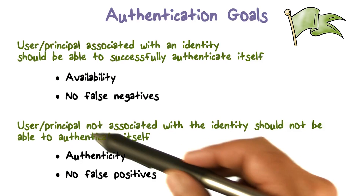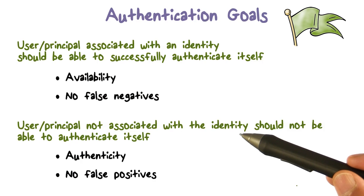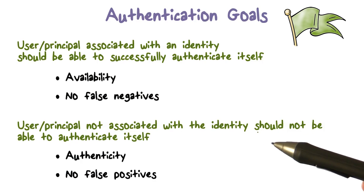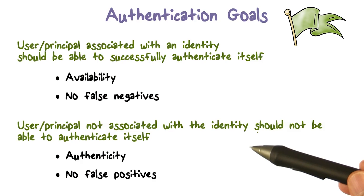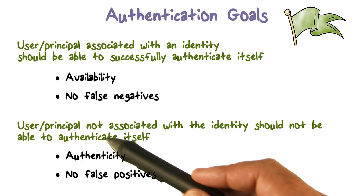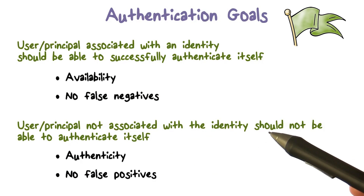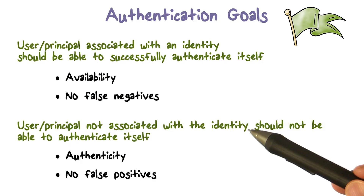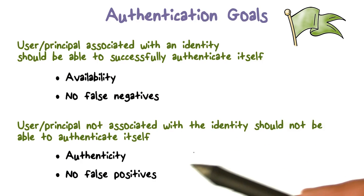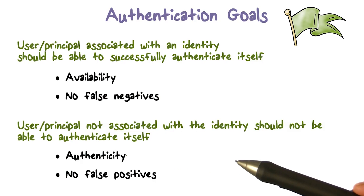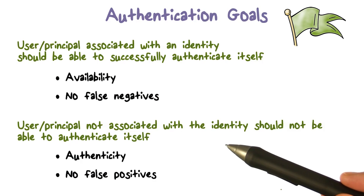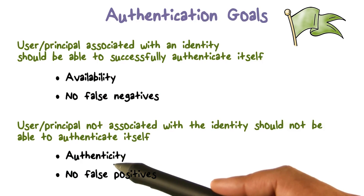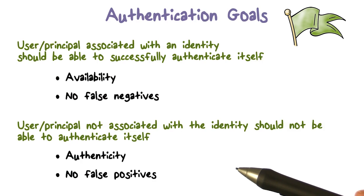The other possibility is a bad actor, Eve, trying to impersonate Alice. Eve walks up to the system and says, 'I am Alice.' But it's really not her. We don't want Eve, who is not associated with Alice's identity, to be able to log in. If we had a guarantee against that, then we have authenticity in the authentication process — if we authenticate someone, we know for sure that it is that person.